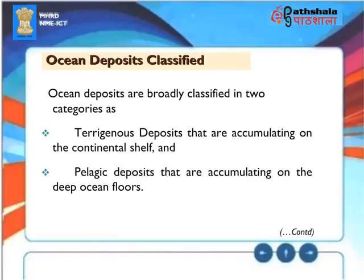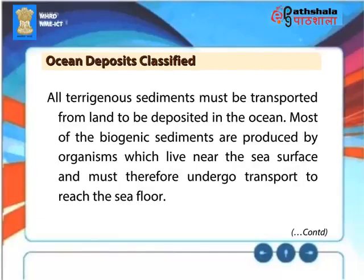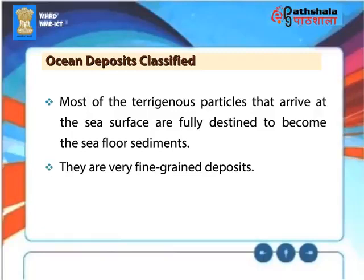Ocean deposits are broadly classified into two categories: pterigenous deposits that accumulate on the continental shelf, and pelagic deposits that accumulate on the deep ocean floors. All pterigenous sediments must be transported from land to be deposited in the ocean. Most biogenic sediments are produced by organisms which live near the sea surface and must therefore undergo transport to reach the sea floor. Most pterigenous particles that arrive at the sea surface are destined to become seafloor sediments and are very fine-grained deposits.